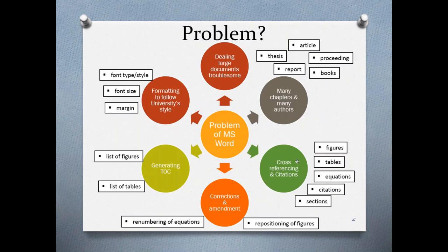If you use this technique, it will ease your work and let Word automate the numbering, citation numbering, and equation numbering. We also have to know that a problem of Microsoft Word is that there are correction and amendment stages all the way through producing the final thesis, because it must go through the correction stage and the amendment stage.